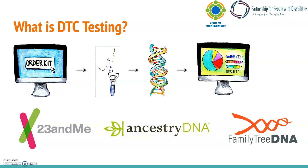You get different results based on the type of kit that you purchase, or the company you purchase from. 23andMe is arguably the most popular right now, and they offer health kits, ancestry kits, and combo kits that provide data on both ancestry and health. Companies like Ancestry and FamilyTreeDNA lean a bit more towards the ancestry component alone. But there's a laundry list of companies to choose from for whatever you're looking for.